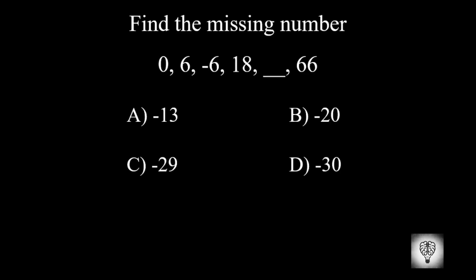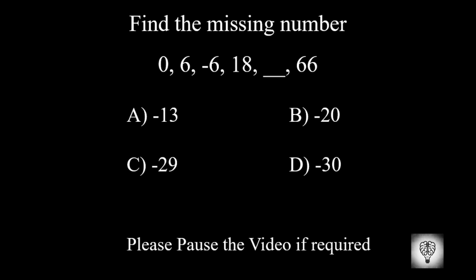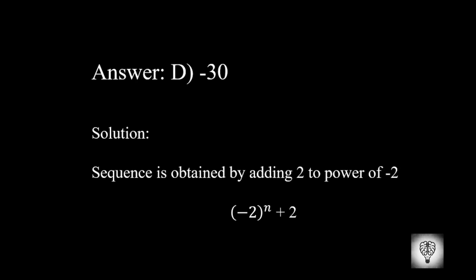Find the missing number. Please pause the video if required. The correct answer is minus 30. The sequence is obtained by adding 2 to the power of minus 2.